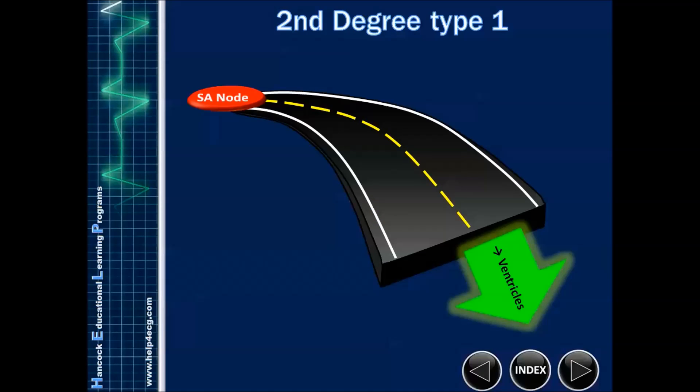In second degree type one, I want you to imagine that the SA node traveling through to the AV node is a road, and that road travels through to the ventricles through the AV node. Somewhere between the SA node and through the AV node there's some type of block occurring. In a second degree type one, the first thing that occurs is a normal impulse. The SA node fires and it goes without a hitch down to the ventricles.